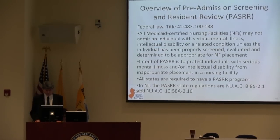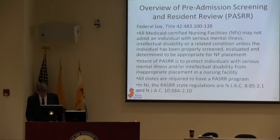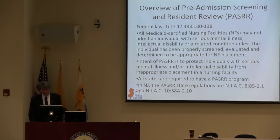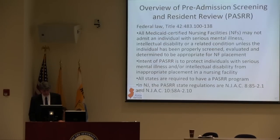Medicaid-certified nursing facilities cannot admit an individual with serious mental illness, intellectual disability, or related condition unless the individual has been determined appropriate for nursing home placement. This all grew out of a major law — the Omnibus Budget Reconciliation Act passed in 1987, known as OBRA '87.